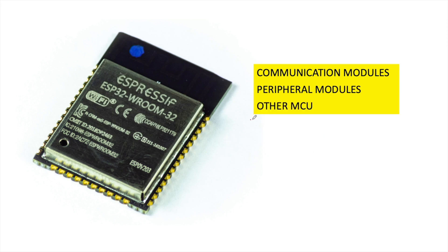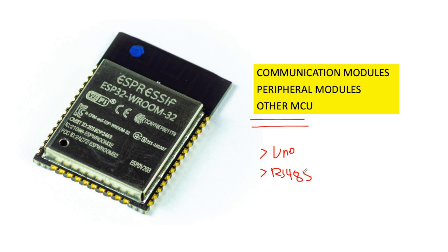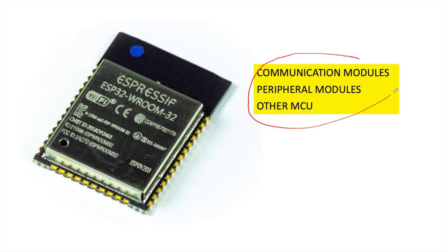Also, UART is used when we are going to interface the ESP32 to other MCUs, like if you're going to interface it with the Arduino Uno or other Arduino boards, or sometimes there are RS-485 communications that also use UART. These three are the major reasons why we need to understand how to use UART.